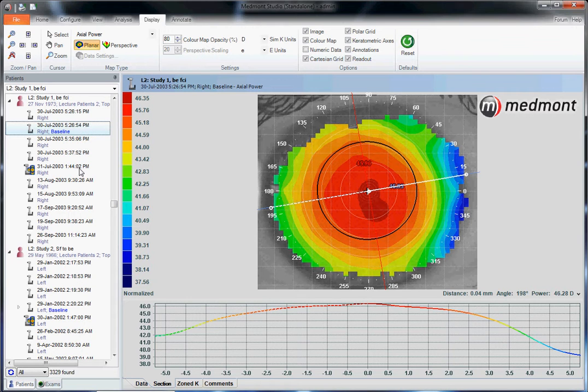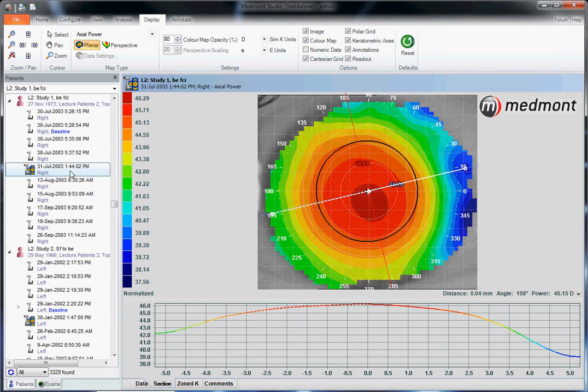However, with the Medmont composite map function, this is the best way to create a pre-orthokeratology baseline map. By having the patient imaged in different fixations, we're able to push the placido across virtually 100% of the visible iris, giving us a larger view of the eye shape for an optimal pre-ortho-K topography.